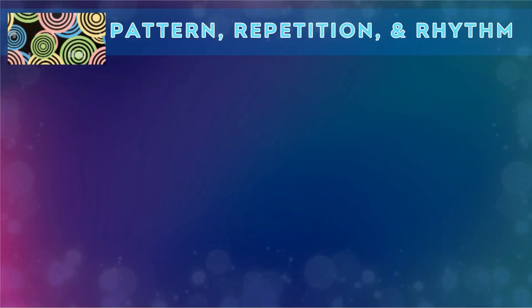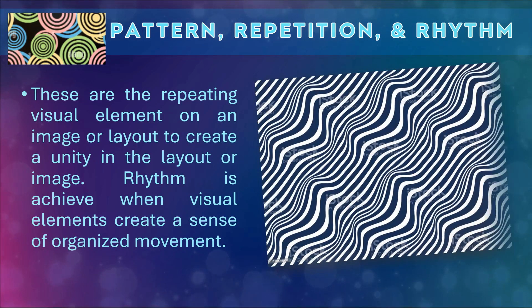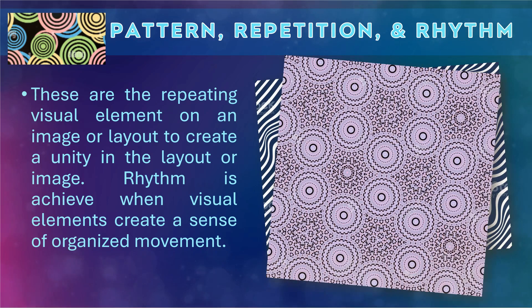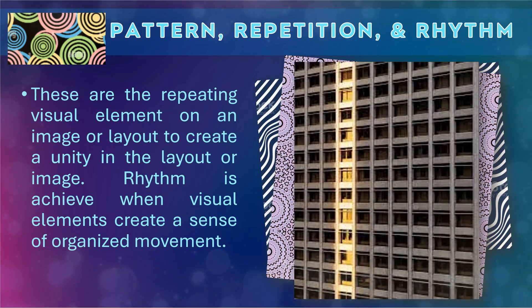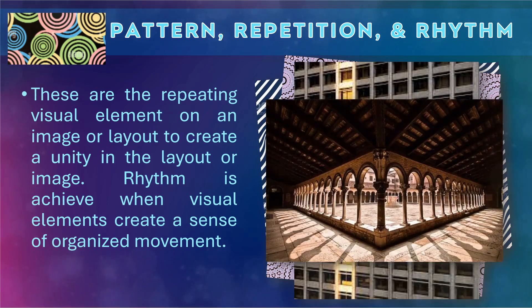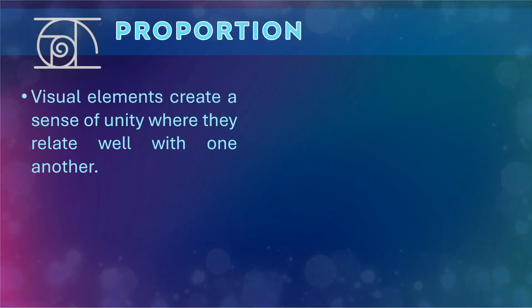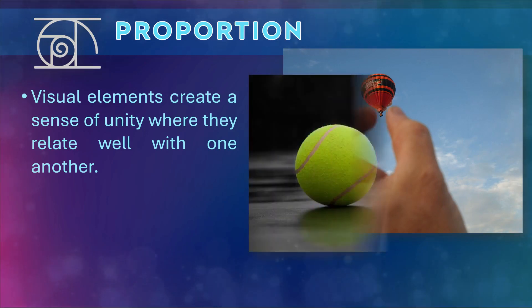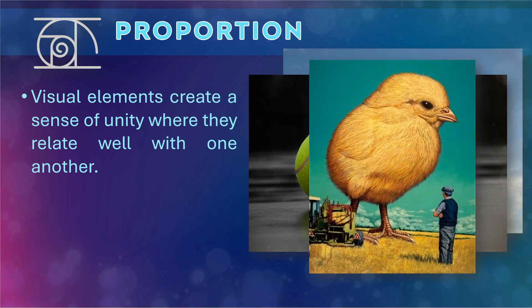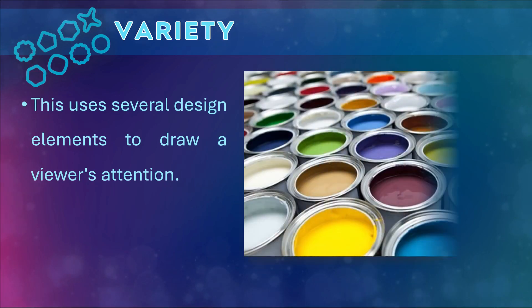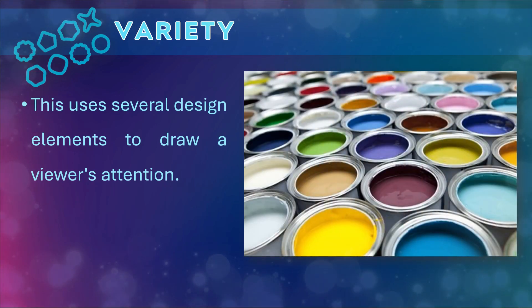Next is pattern, repetition, and rhythm. These are repeating visual elements on an image or layout to create unity. Rhythm is achieved when visual elements create a sense of organized movement. Next is proportion — visual elements create a sense of unity where they relate well with one another. And last is variety — images that use several design elements to draw a viewer's attention.